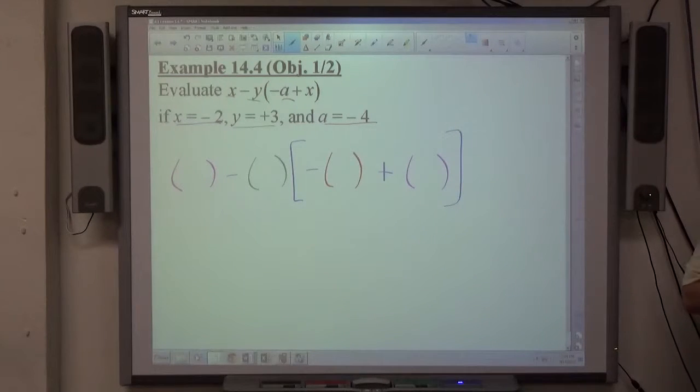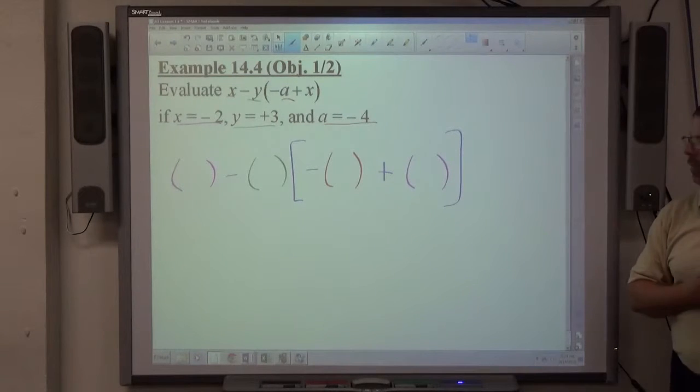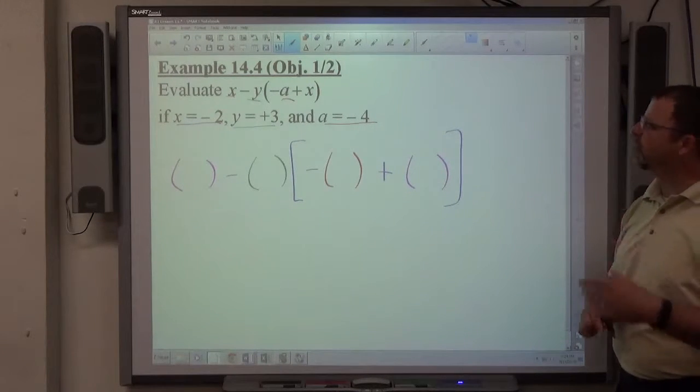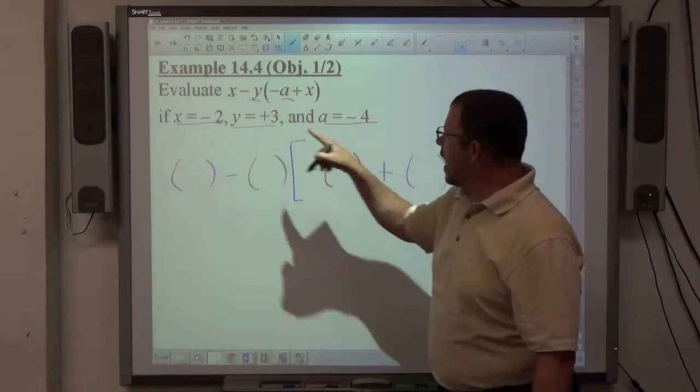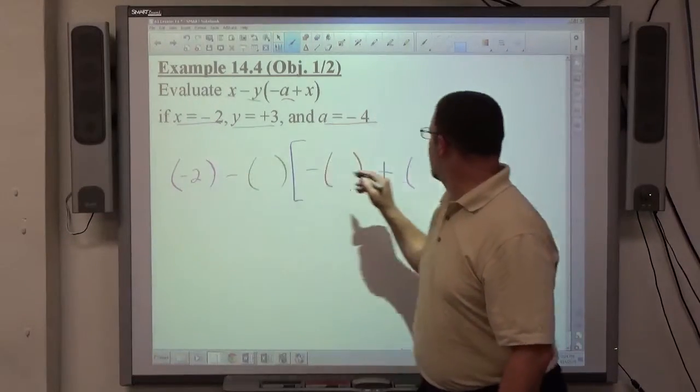And I create the structure of the original problem using parentheses and or brackets, replacing all the parentheses with the numerical values, including the sign of each of the numbers. Every x is a negative 2. There's an x here and here.